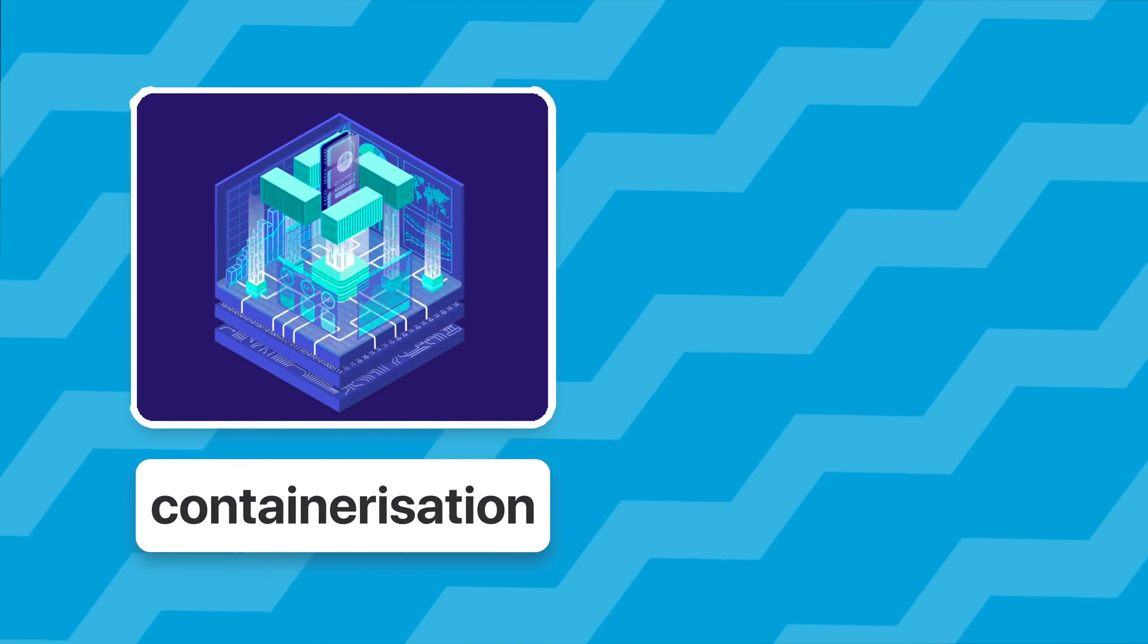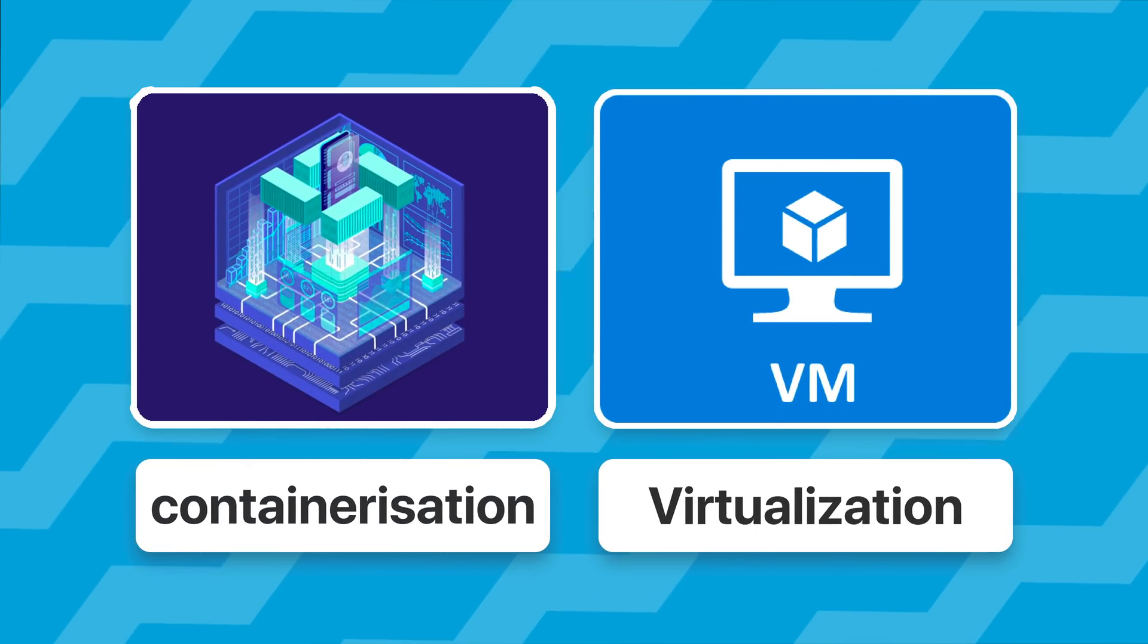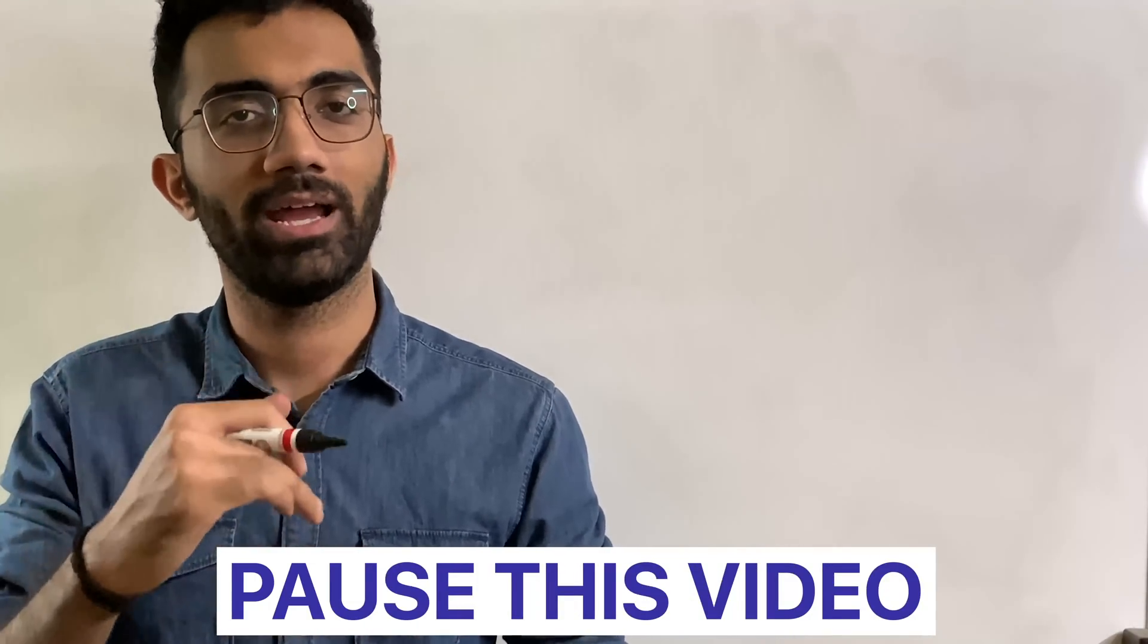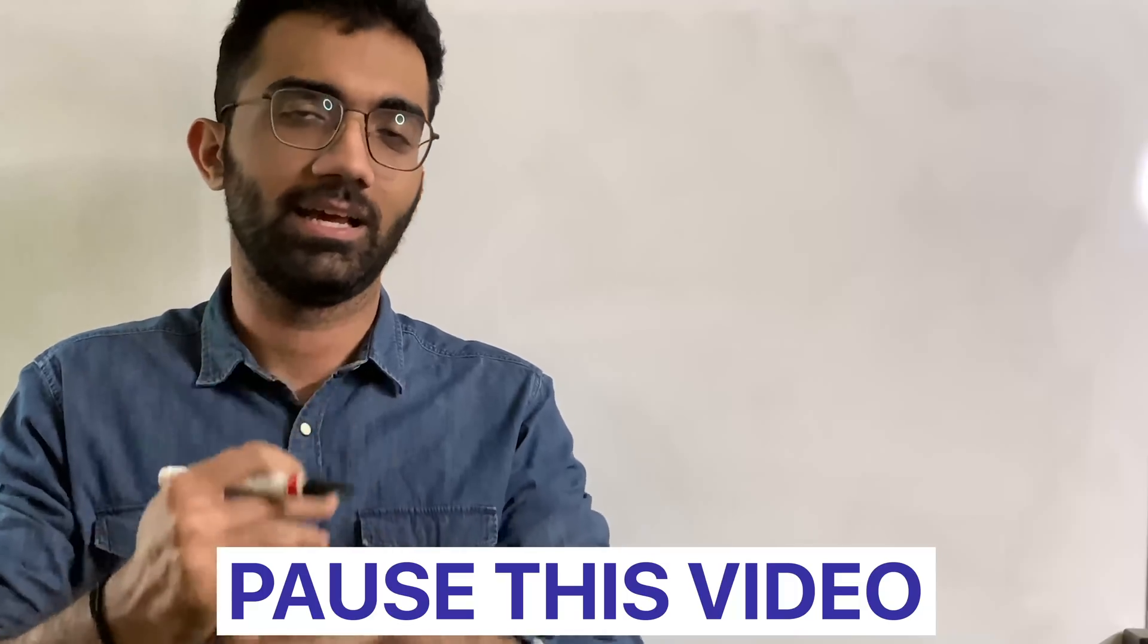Now if you had to guess how AWS Lambdas work internally if I give you two options, the first one is containerization, the second one is virtualization that is running a VM virtual machine and then running your Lambda inside it. Which one would you choose? Pause this video for a couple of seconds and think about it and I'm gonna give you an answer in a couple of seconds.